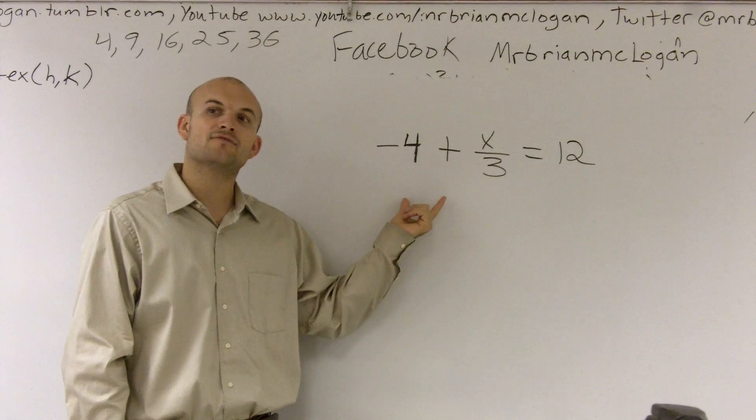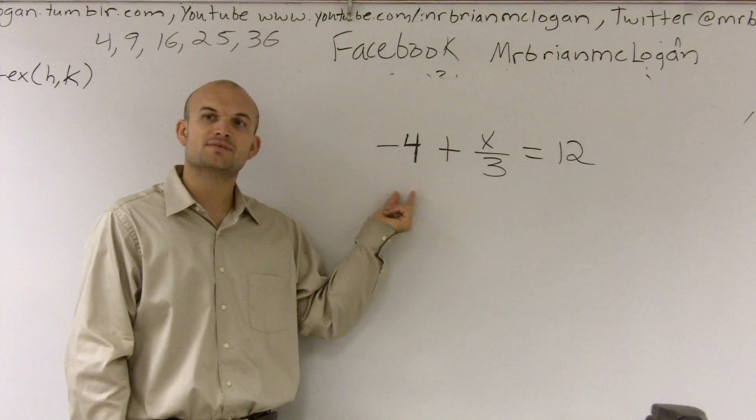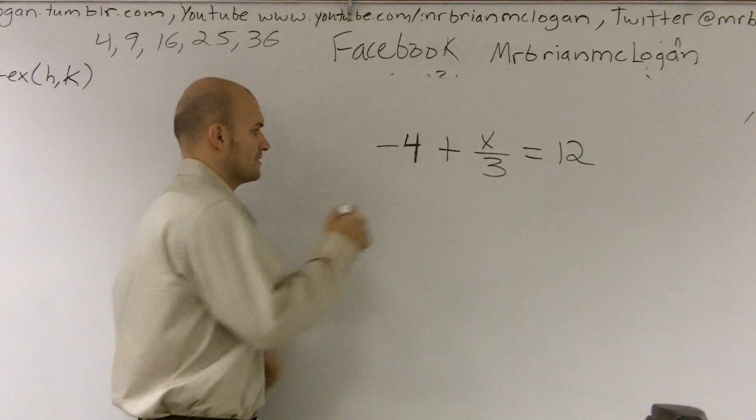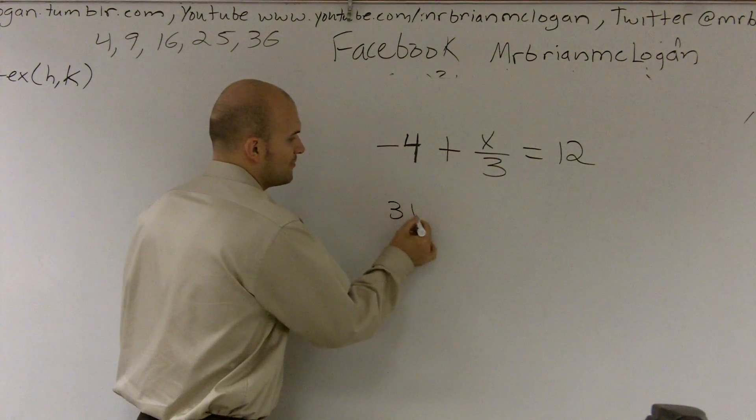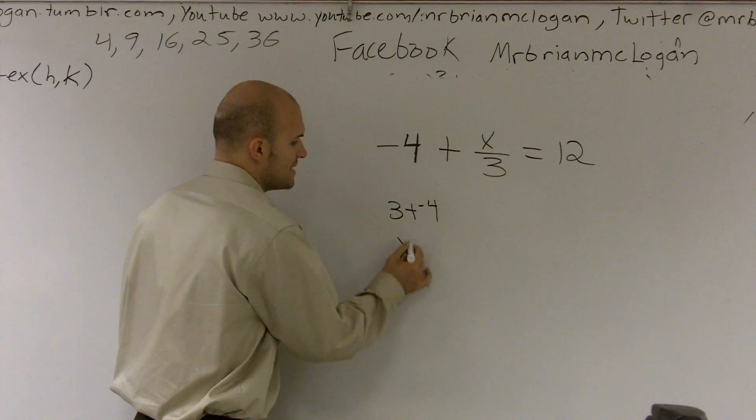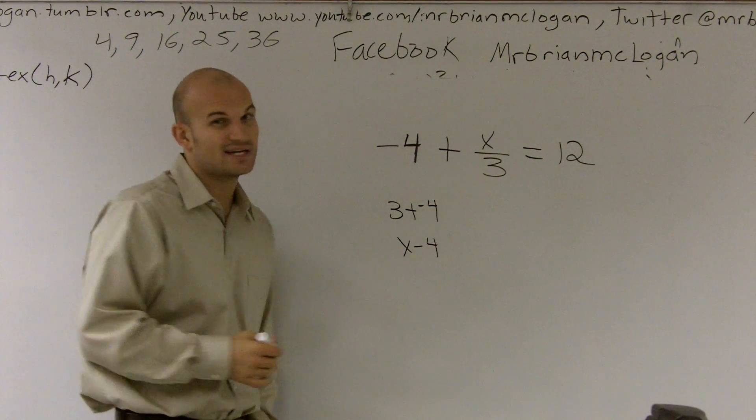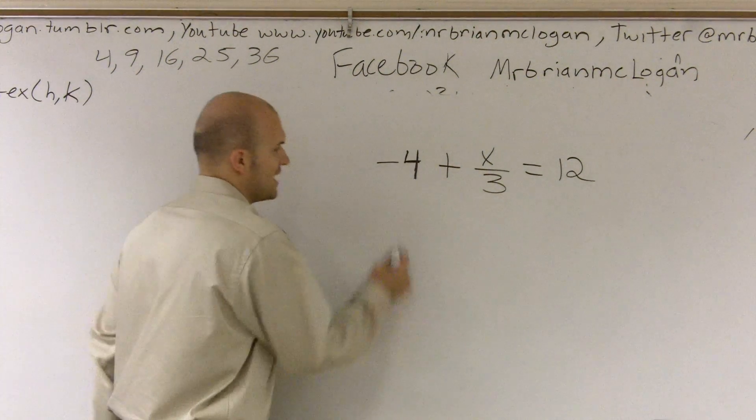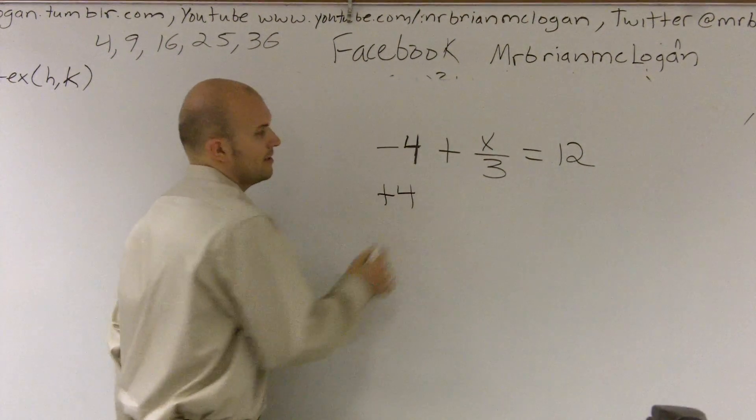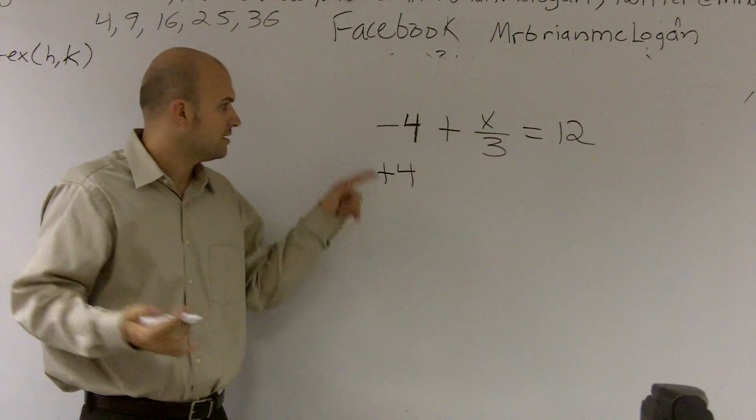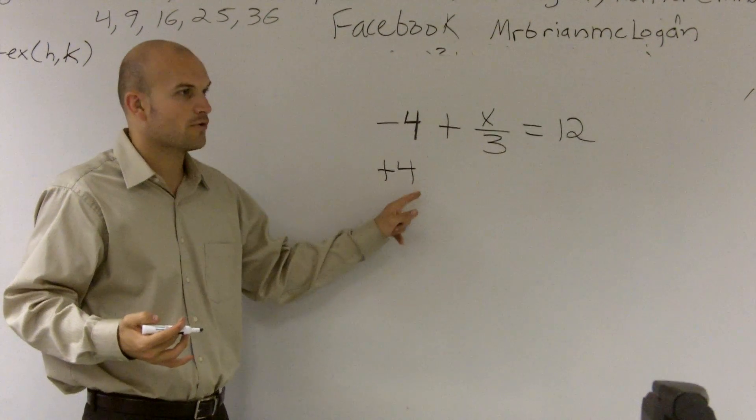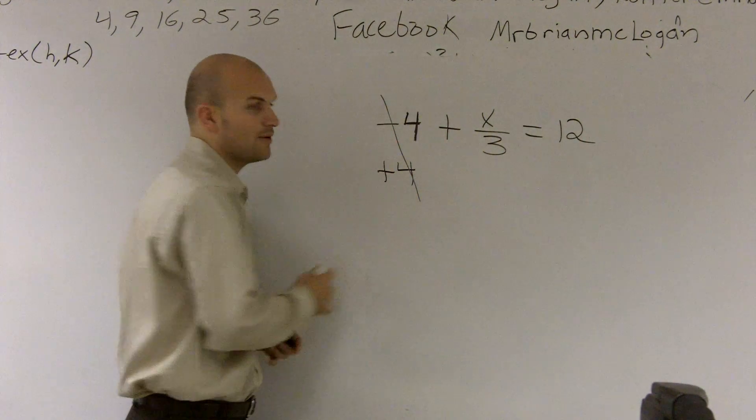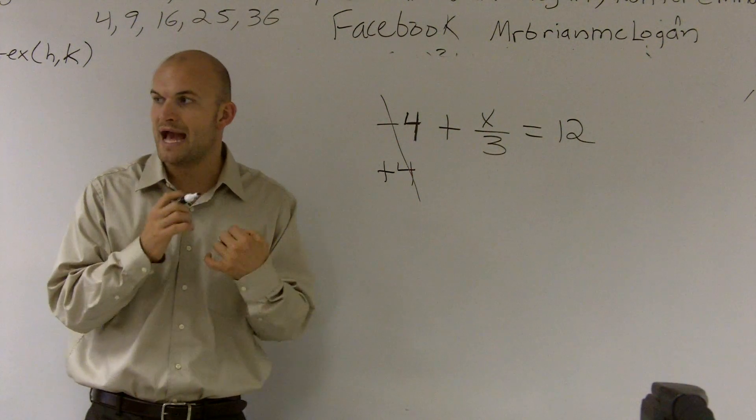We're adding a negative 4. So, you guys should know that adding a negative 4 is the exact same thing as subtracting 4. x over 3 plus a negative 4 is the same thing as x over 3 minus 4. You guys know those are equivalent. Because what we're going to do is we're going to actually add 4. Because what happens when I add a 4? A negative 4 plus 4 becomes a zero. And that's what I want to obtain. I want to obtain a zero when I'm adding or subtracting.